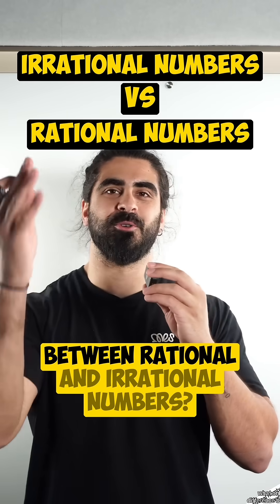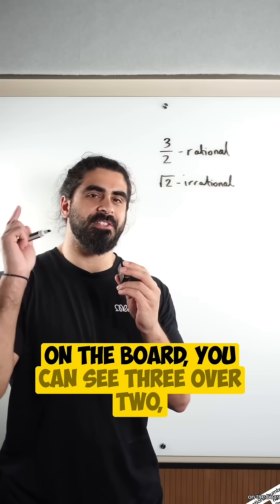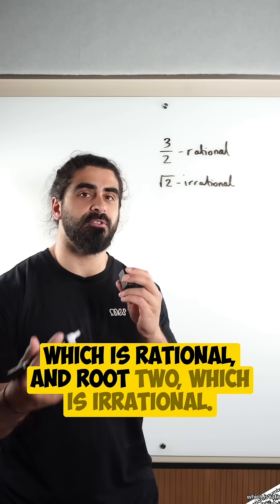What on earth is the difference between rational and irrational numbers? On the board, you can see 3 over 2, which is rational, and root 2, which is irrational.